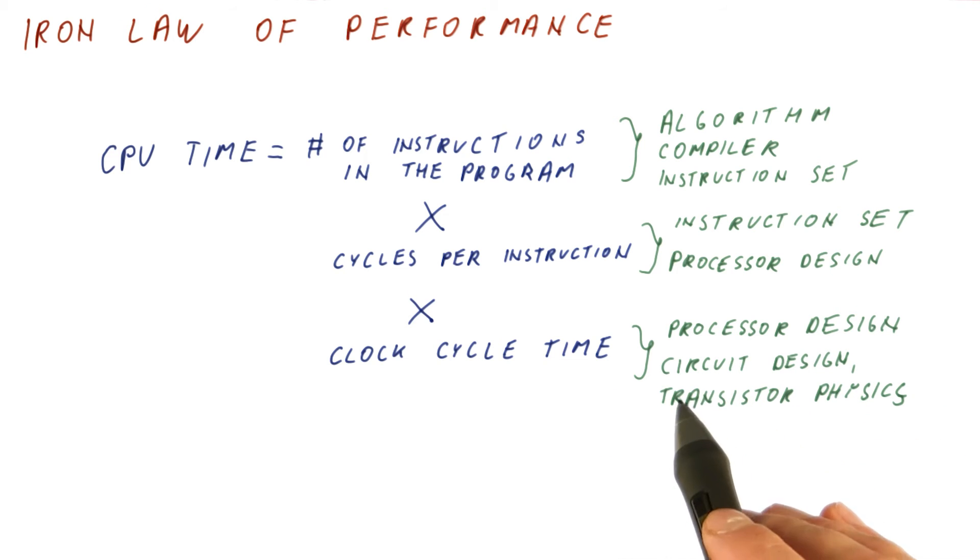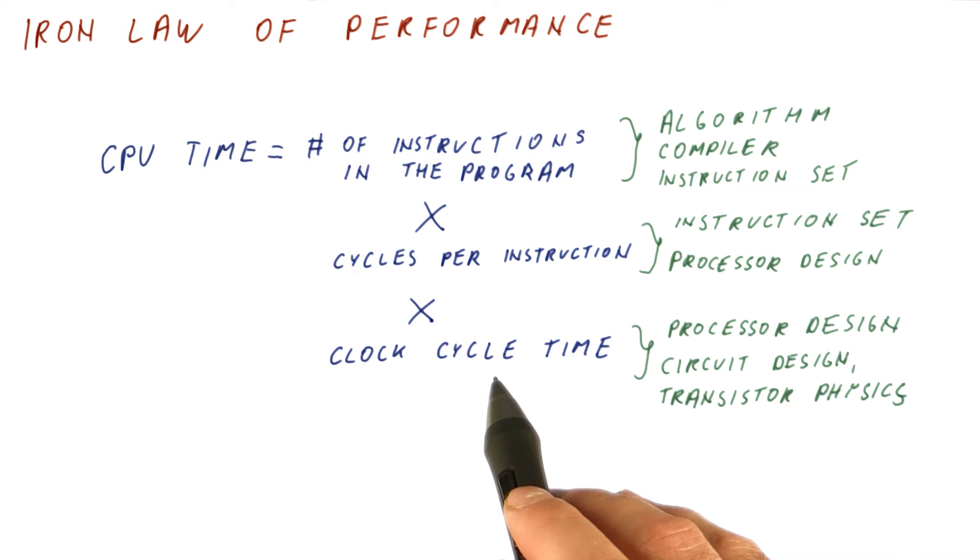And also, our clock cycle time can be affected by circuit design. If we have faster circuits, they will need less time to do the same thing that needs to be done in the clock cycle. And also by transistor physics, because they allow us to build faster circuits.